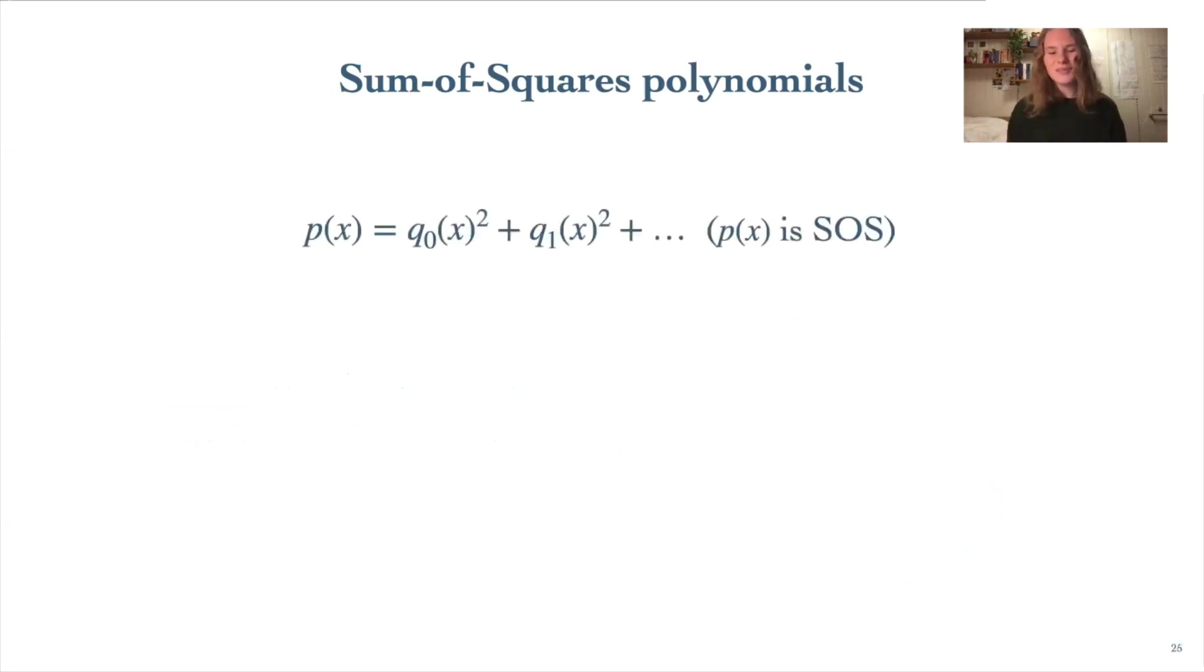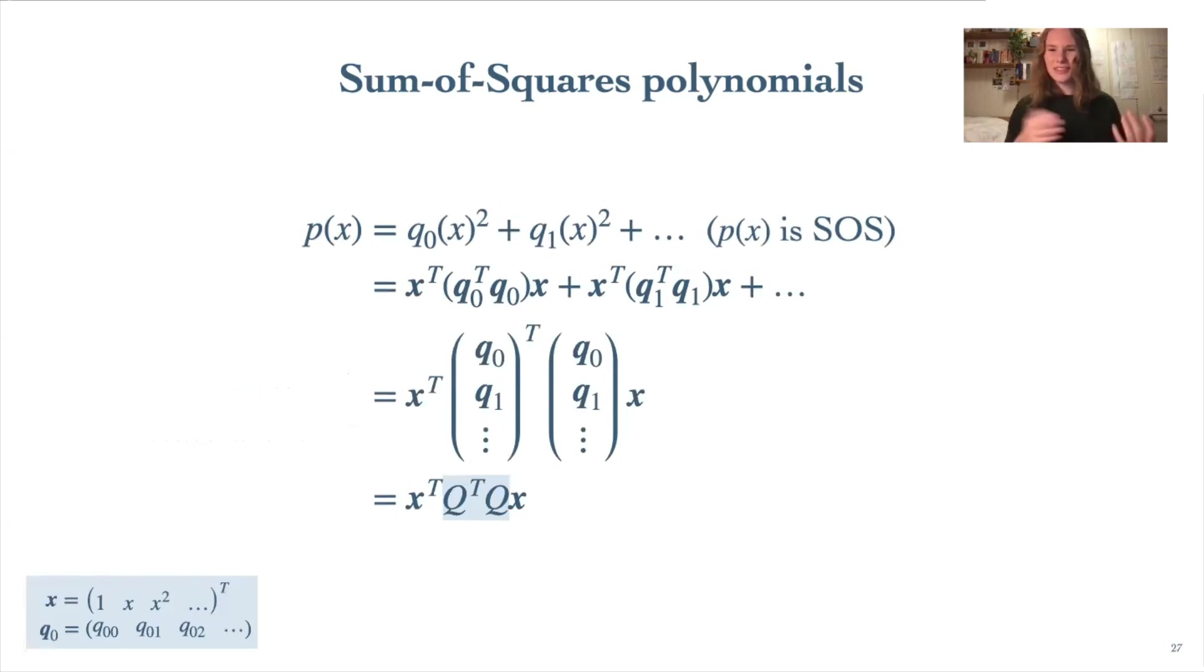But let's investigate the SOS polynomial a little bit more. So here I'll analyze the univariate case, just for simplicity, but this generalizes pretty drastically to multiple variables like we'll use in our problems. First, I'm going to write our SOS polynomial in this matrix notation, where we're introducing this vector x of monomials and these q vectors of the coefficients of our q polynomials. So combining these terms together and doing a little bit of math, we get that our SOS polynomial can be rewritten in a special form as the multiplication of the monomial vector on either side of this matrix, q^T times q.